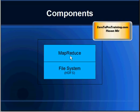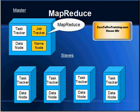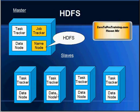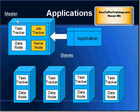We have learned that Hadoop has two main components at a high level: MapReduce and the file system. Job Tracker and Task Trackers are part of the MapReduce component — they all fall under the umbrella of MapReduce. Similarly, the Name Node and all Data Nodes fall under the umbrella of the Hadoop file system, HDFS.